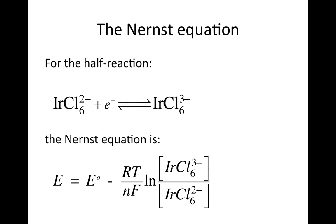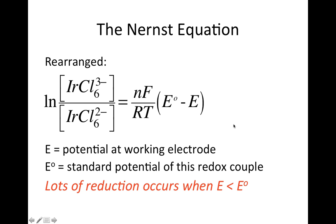The half-reaction is hexachloroiridate being reduced by one electron, and the Nernst equation for that looks like this. You're probably used to calculating half-cell potentials E given the standard potential of the half-reaction — this is a constant for hexachloroiridate — and the concentrations of the product and reactant. But we can rearrange the Nernst equation to tell us the ratio of reduced to oxidized hexachloroiridate as a function of the potential E on the working electrode. This ratio doesn't get large until the potential at the working electrode E becomes less than the standard potential E° of the redox couple.